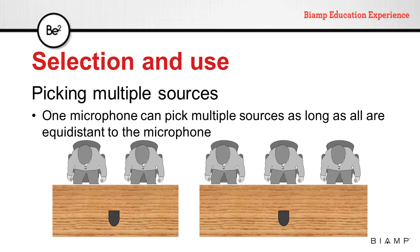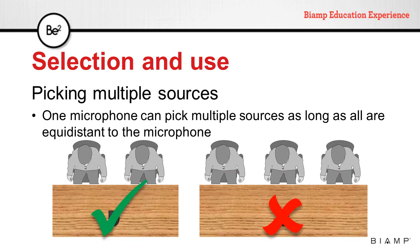In some cases we might want to pick up multiple sources with the same microphone. This can be done as long as all the sources are equidistant to that microphone. For example, if we place a microphone equidistant to two talkers sitting at a table, it will properly pick up both. However, if we try to use one microphone to pick up three talkers, the talker in the center will be much closer, sounding louder than the other two — this is usually not recommended.